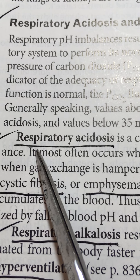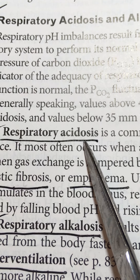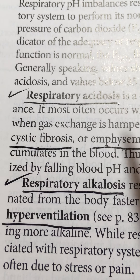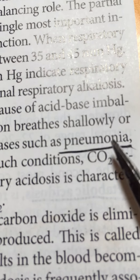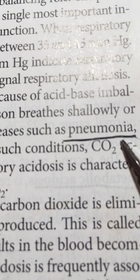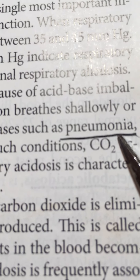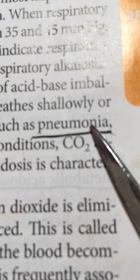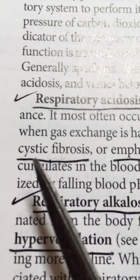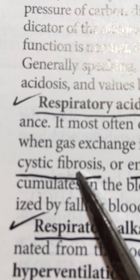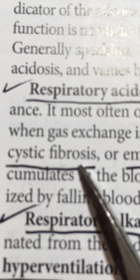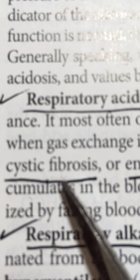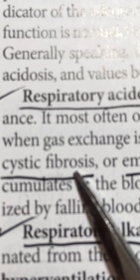Respiratory acidosis occurs when the rate of respiration is decreased and we're retaining CO2. This can result from pneumonia — people cannot get a full breath due to buildup in the lungs, which is also often painful. Cystic fibrosis is another cause, involving a buildup of mucus in the lungs; patients sometimes must do chest percussion every morning and cough to expectorate significant amounts of mucus.